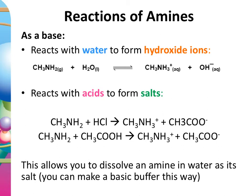The way amines act as bases is by affecting the position of equilibrium when H2O dissociates to H+ and OH−. The amine reacts with water to form hydroxide ions — more precisely, it influences the relative concentrations of hydroxide and H+ ions in the equilibrium. Like any base, amines react with acids to make a salt. An important case to remember: when an amine meets a carboxylic acid, don't overthink it — an amine is a base, a carboxylic acid is clearly an acid, so you simply get a neutralisation reaction producing a salt.